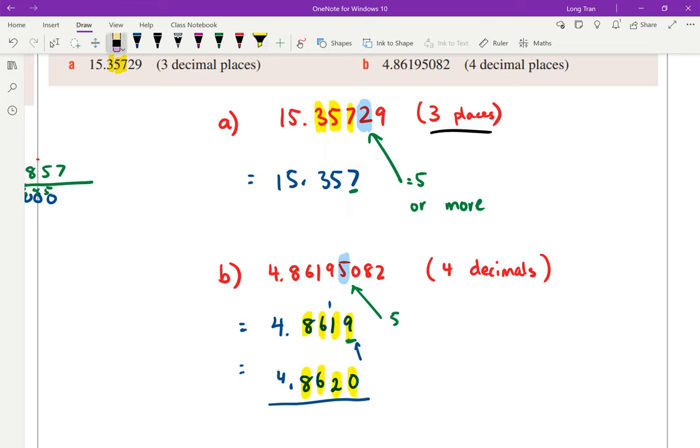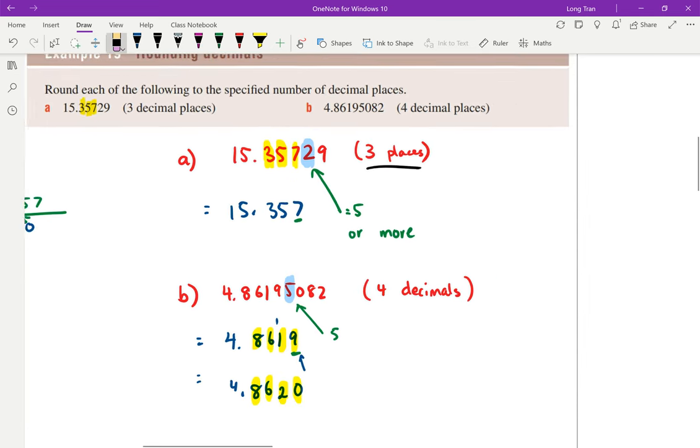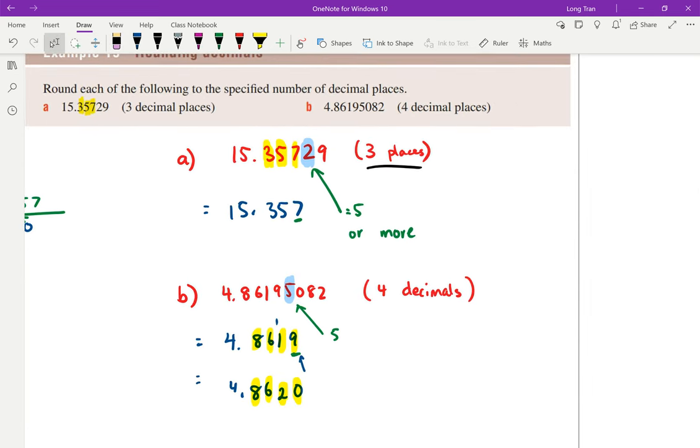So that is the rounding skill. You can see both examples: they wanted three, check the fourth. They wanted four, check the fifth.